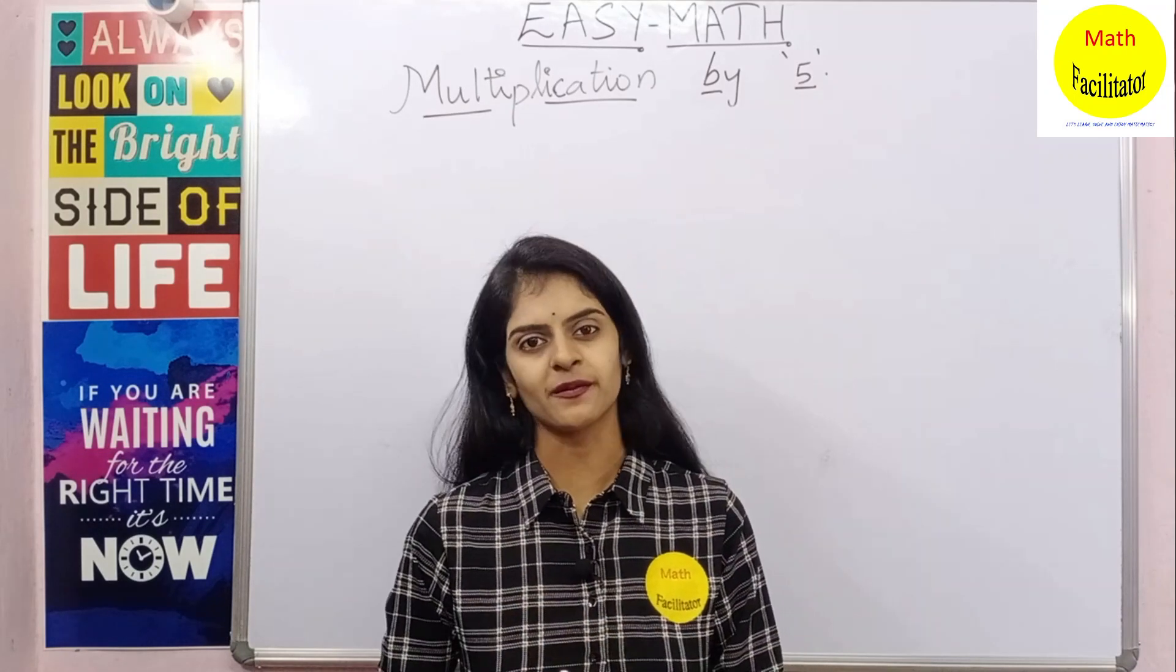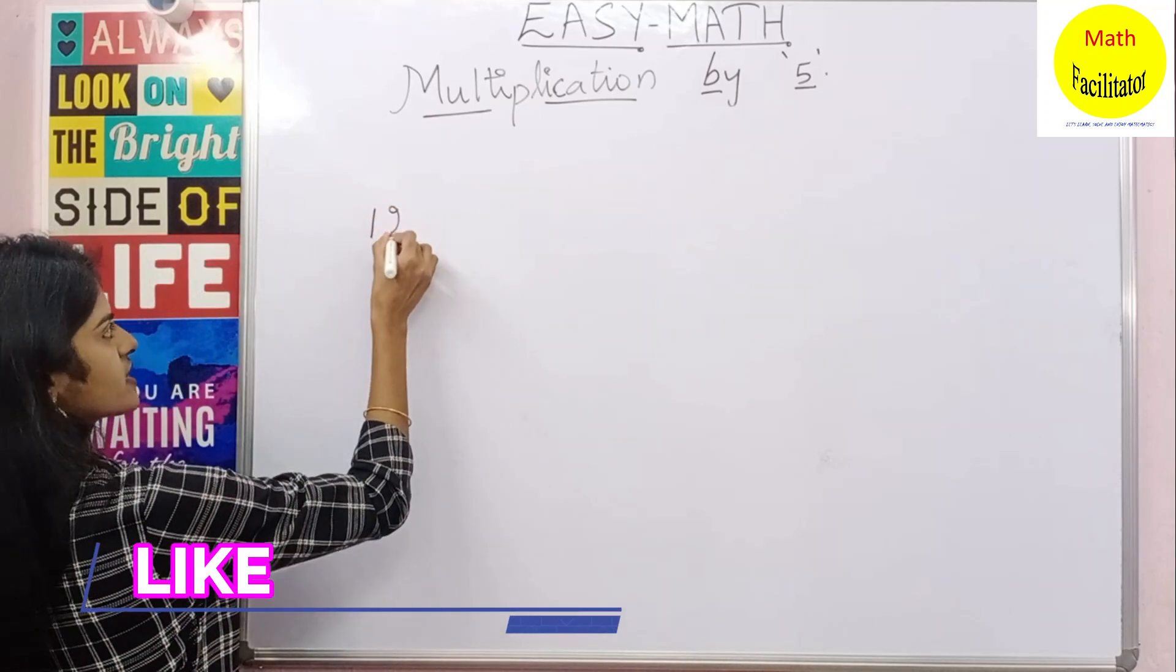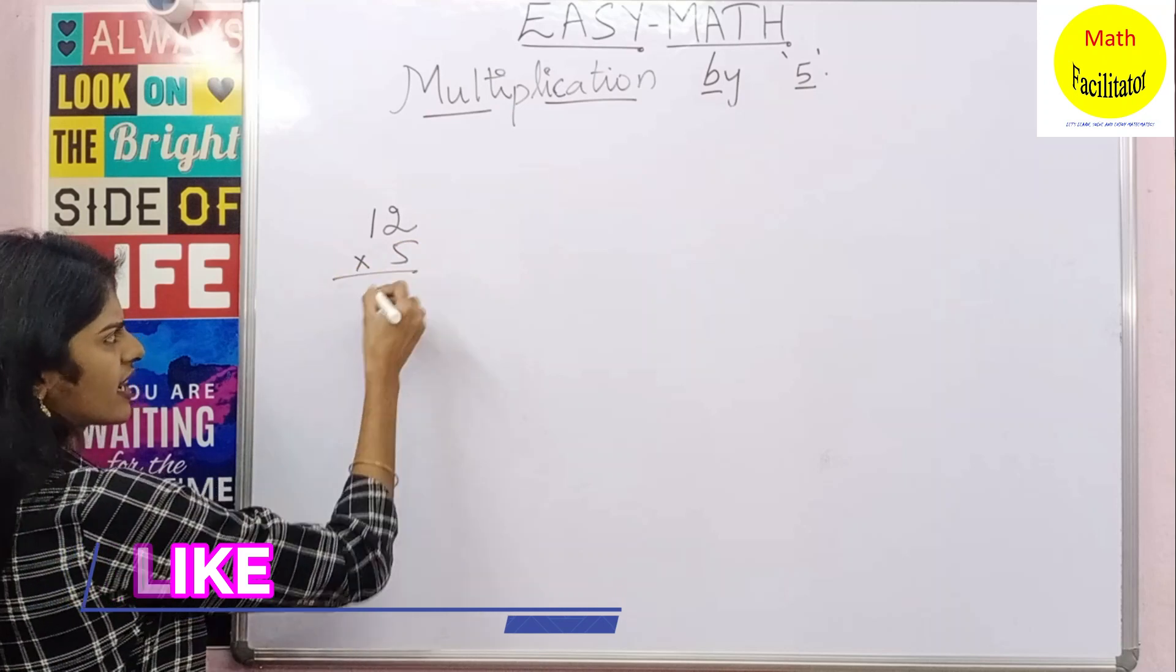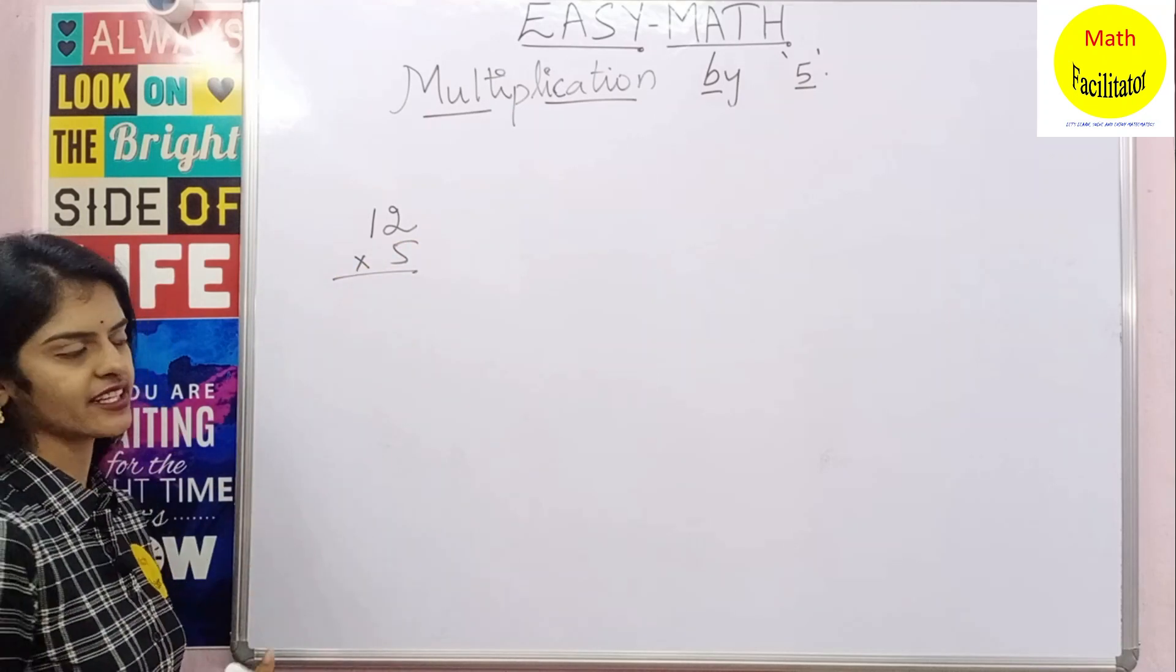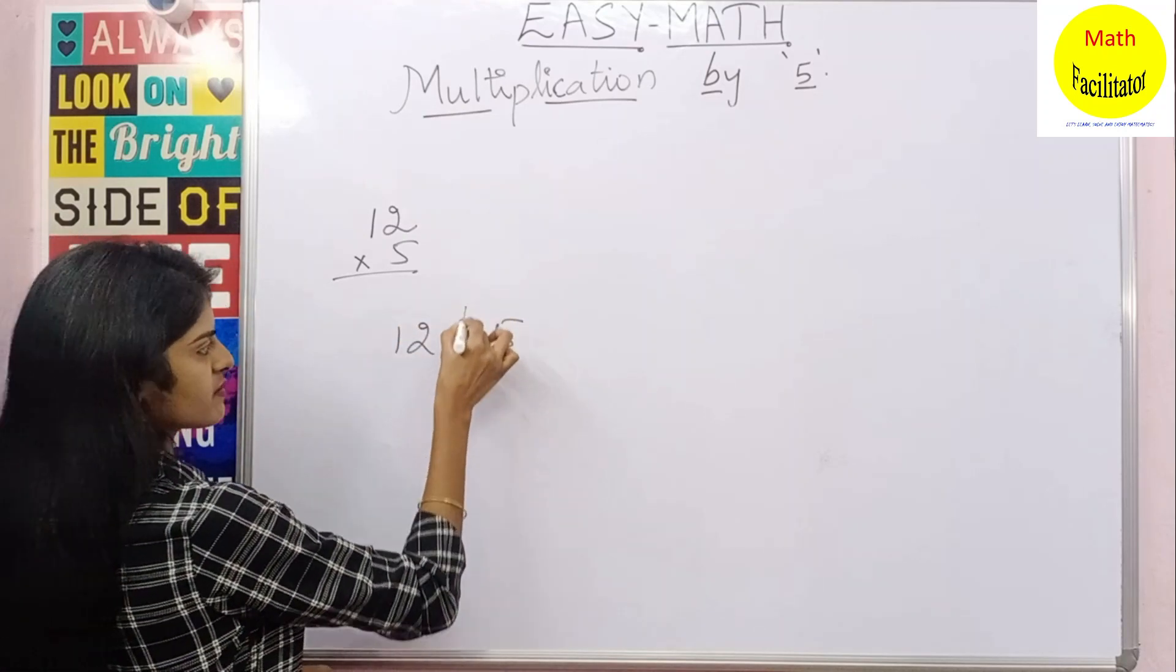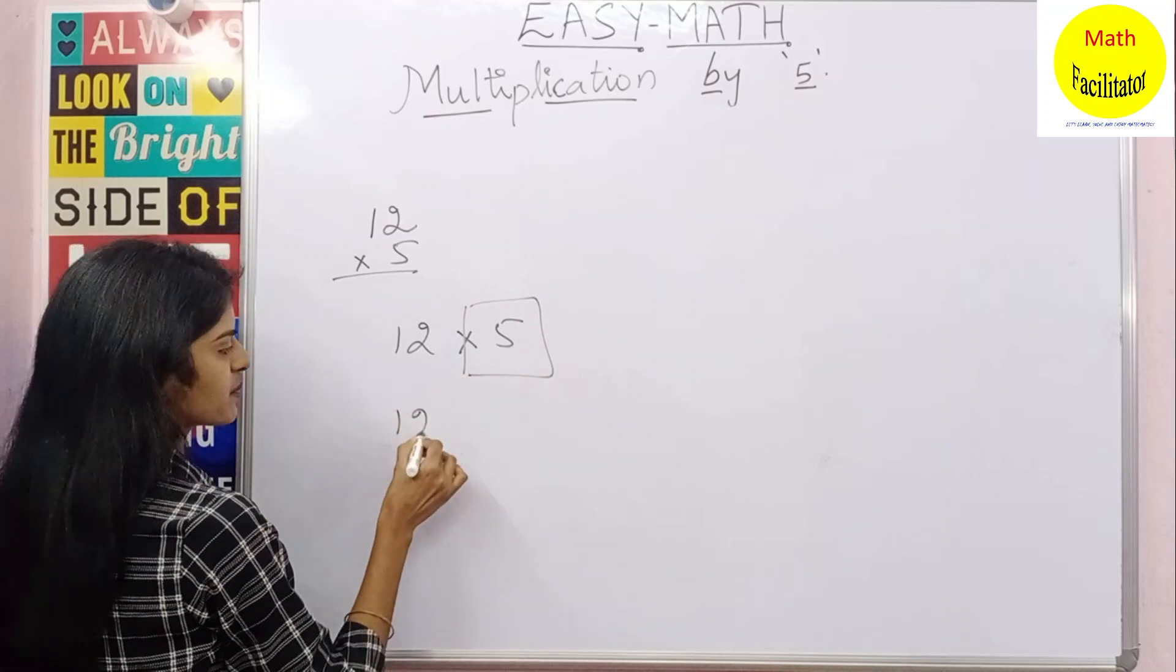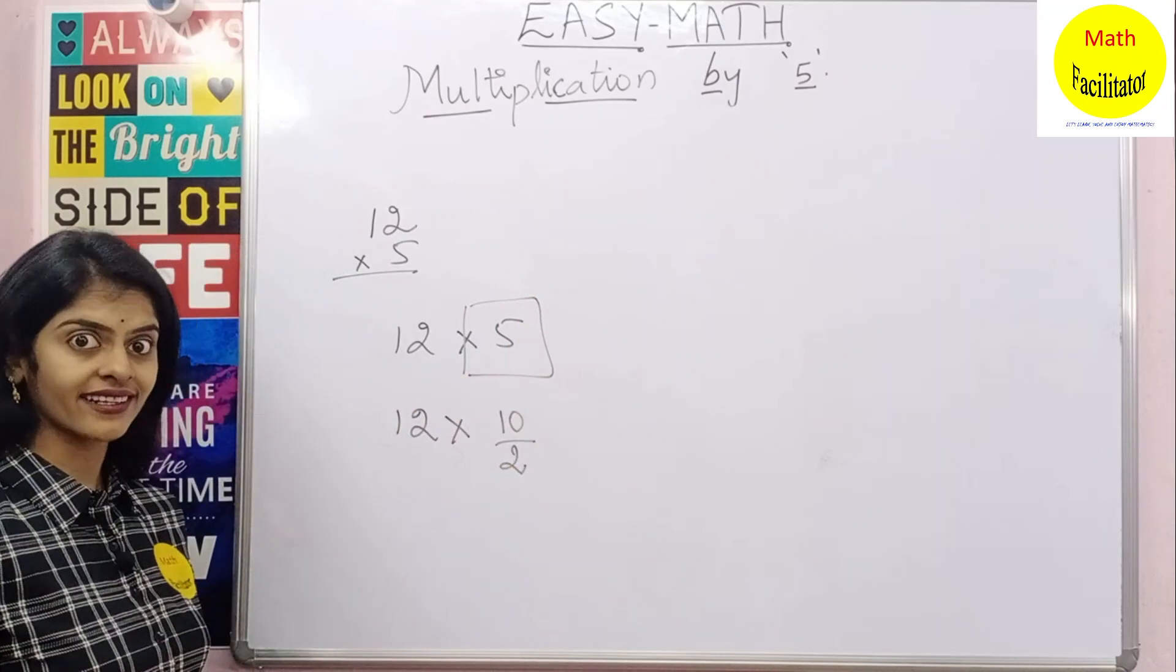So let us discuss that now. Let us take a small number first, suppose 12 into 5. As we all know, 12 times 5 is 60, but still let us use the technique. So 12 multiplied by 5, I can replace it as 10 by 2. Do you agree?